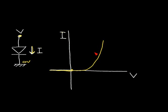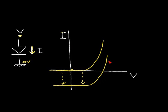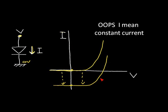Now let's look at what happens when we shine light on the silicon diode. The light causes the I-V curve to shift downward. At the shifted curve, we have current flow at more or less a constant voltage, and the current drops off to zero at the open-circuit voltage point.